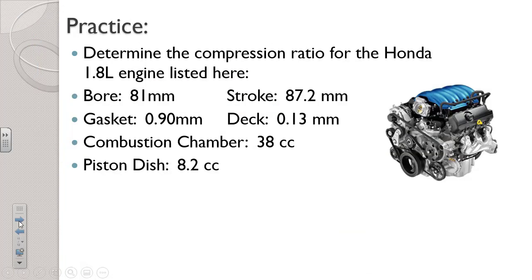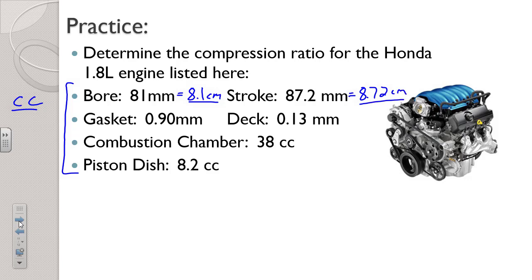I want to work through one more example. Everything given here is in metric — this is a Honda engine, so bore, stroke, and all dimensions are metric. We're going to use cc's for everything. The bore is 81 millimeters — that's not a volume, that's a dimension — which is 8.1 centimeters. The stroke of 87.2 millimeters is 8.72 centimeters. Make sure to convert millimeters to centimeters: 0.9 millimeters becomes 0.09 centimeters, and the deck of 0.13 becomes 0.013 centimeters.